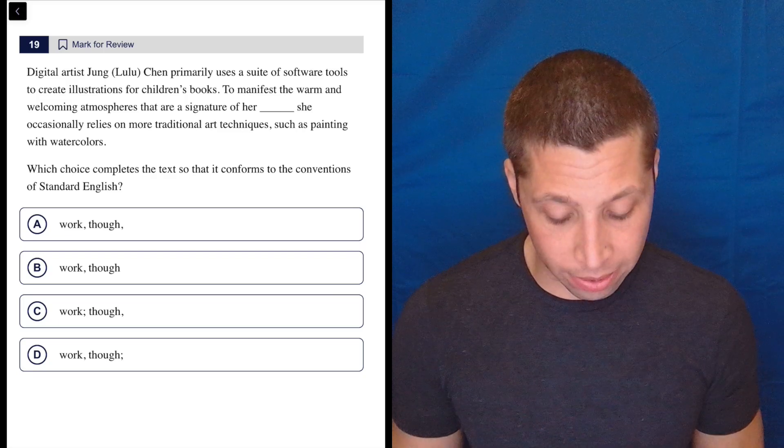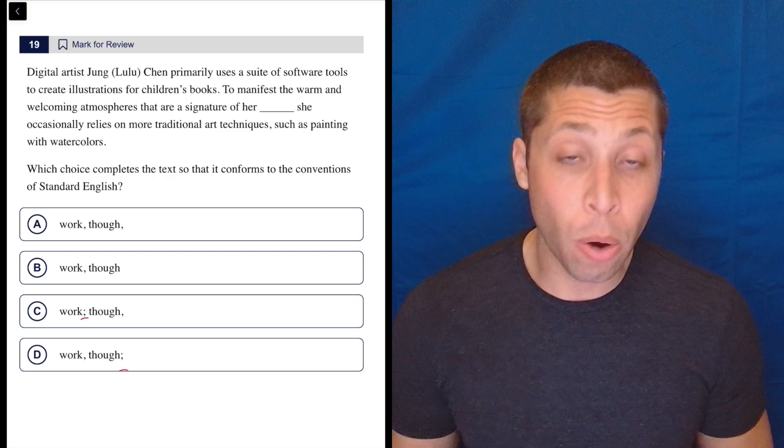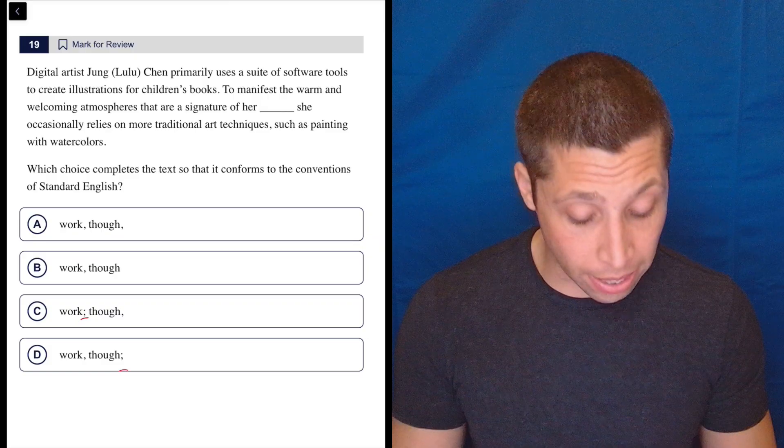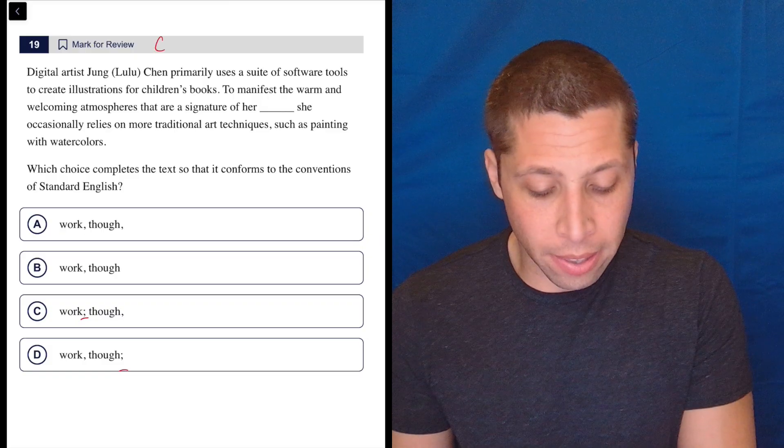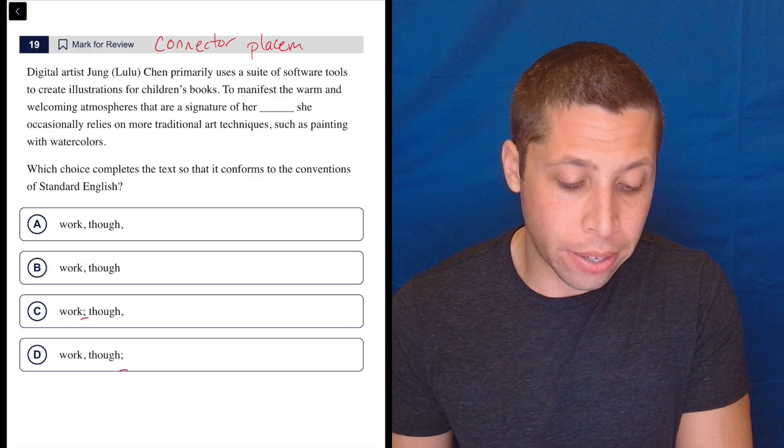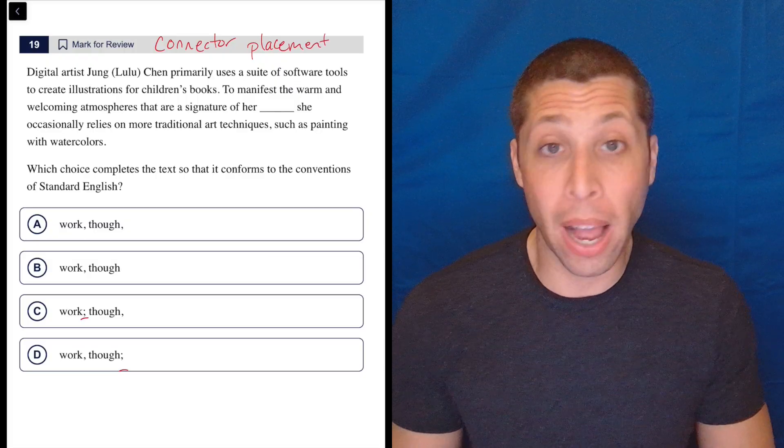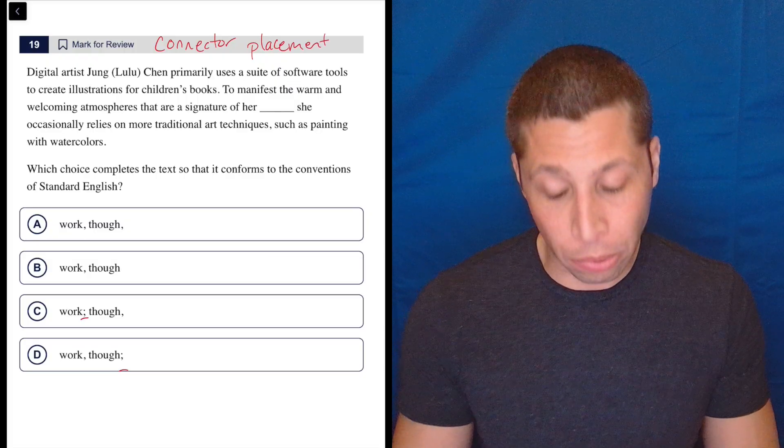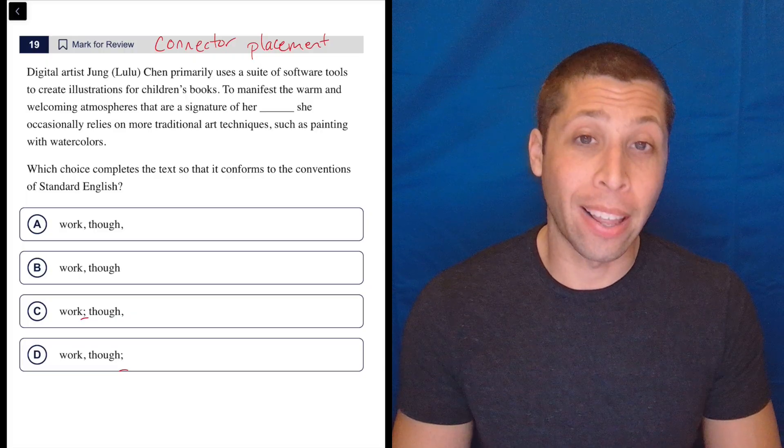The first thing I notice about this question is it's got some semicolons, and we know when we use those, we are joining two complete sentences. So I do recognize that this is more than just about semicolons—this is the connector placement rule. I have a great lesson on this. It is, in my opinion, the hardest rule that we will see on the SAT for grammar, and I think we're about to see why.